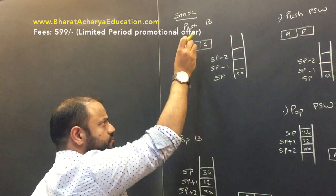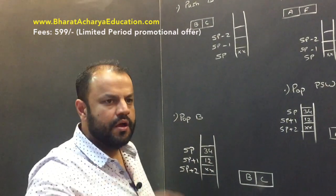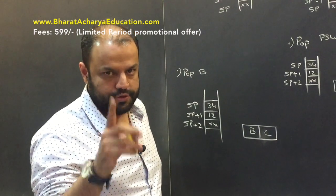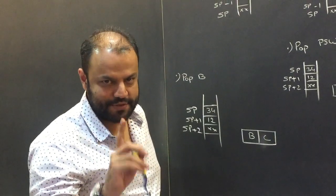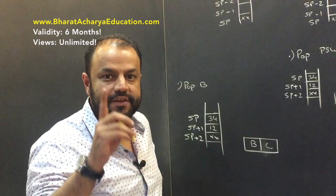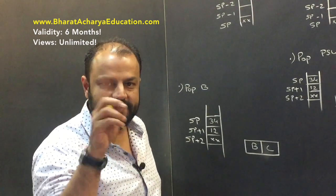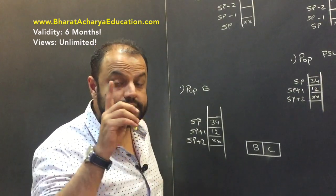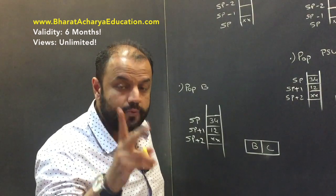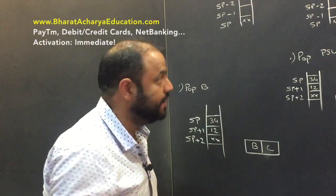These are empty locations at addresses SP-1 and SP-2. Since BC pair is 16 bits, when it goes into the stack, it will occupy two locations. One memory location always carries one byte — 8 bits. BC is 16 bits, so it will require two locations to be stored into the stack.